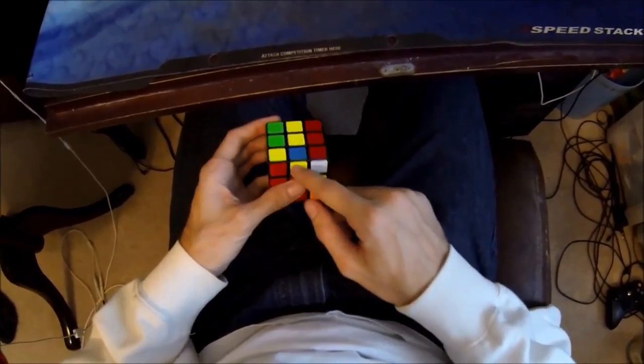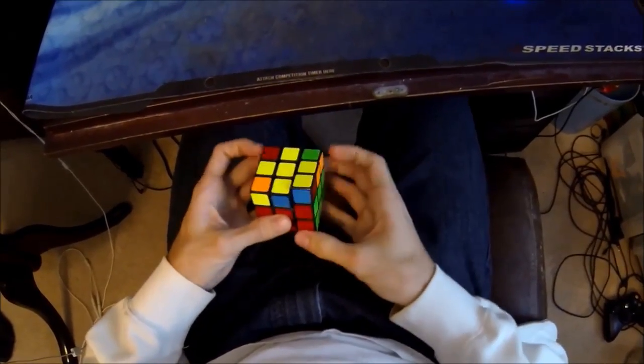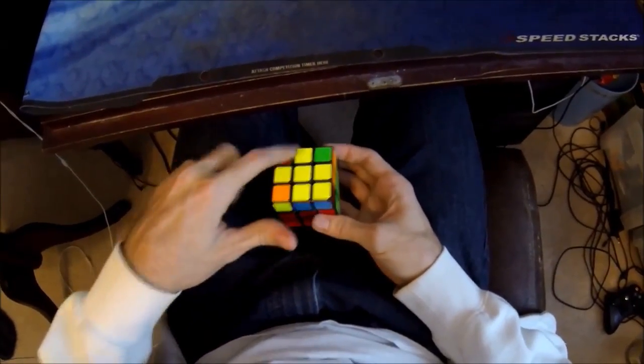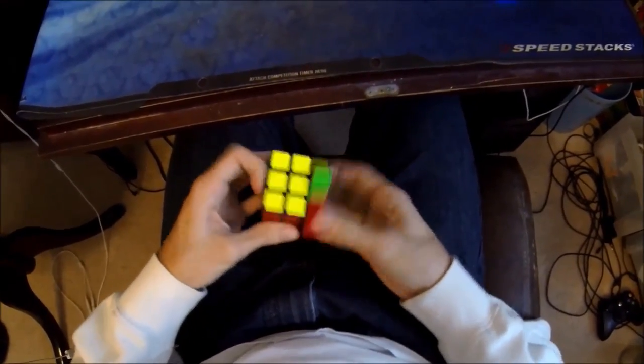You insert the pair while orienting all the edges, giving you a plus sign on top. And then you can just do one of the quick OLLs.